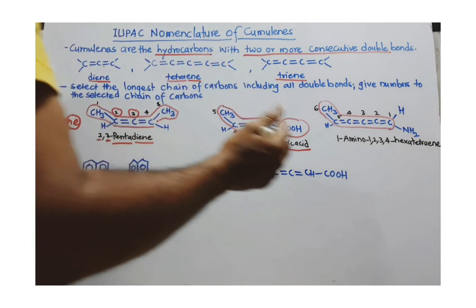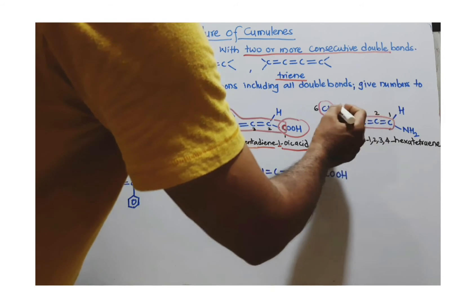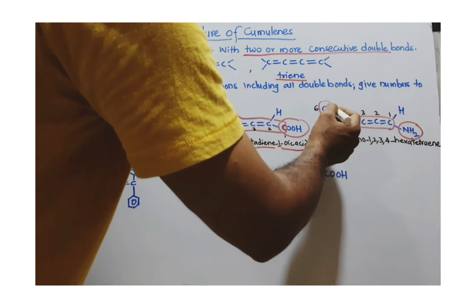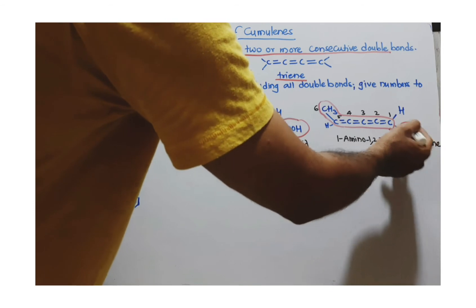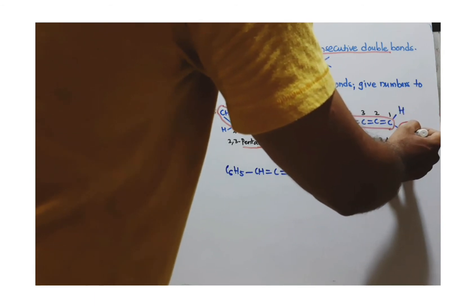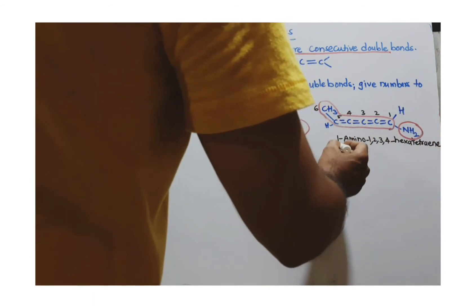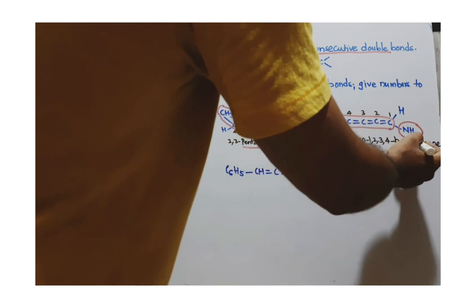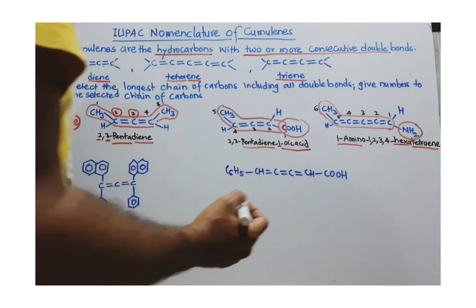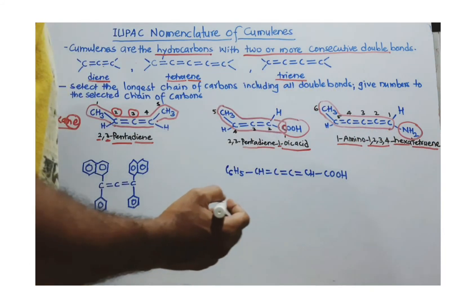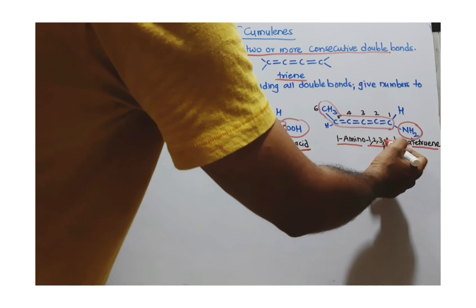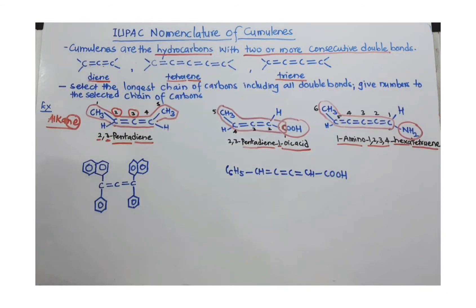In this next example, I have selected the longest chain. There is a substituent present at carbon number 1, so the numbering starts from that end — not the other — because all substituents must get the least possible number. This gives number 1, and this is an amino group, so I use its prefix: 1-amino. Since there are 6 carbons, I write 'hexa'. Since there are 4 double bonds, it becomes 'tetraene'. The double bonds start at carbon numbers 1, 2, 3, 4 — so this is 1-amino-1,2,3,4-hexatetraene.